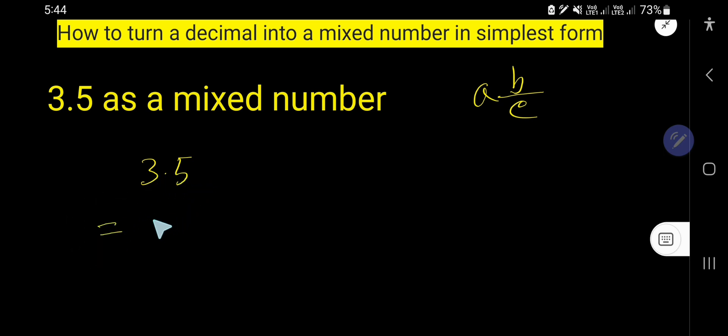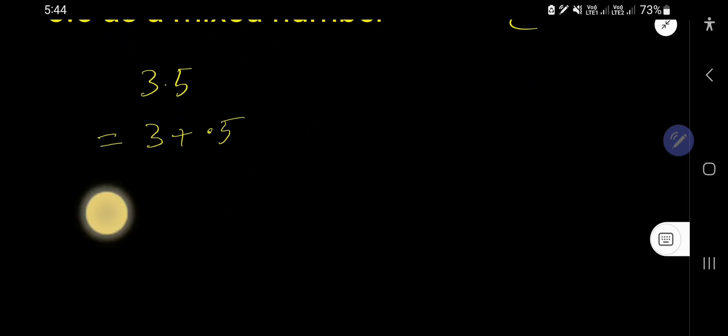Write 3.5 as 3 plus 0.5. Now you need to convert this decimal number to a fraction. So how to do that? Remove the decimal point and write the number you are getting.